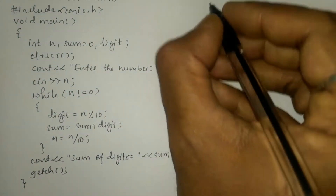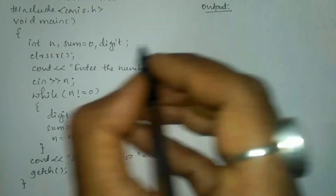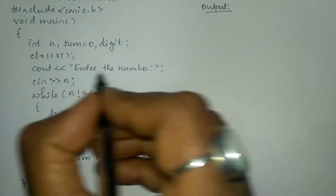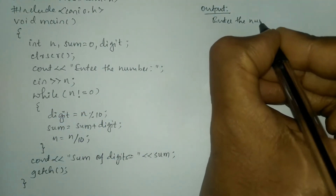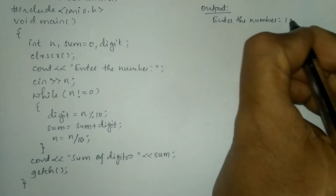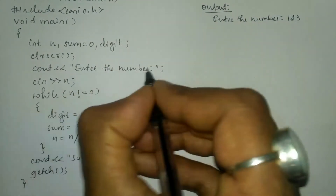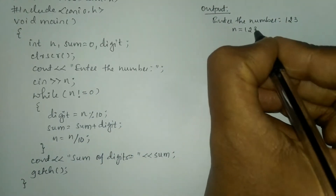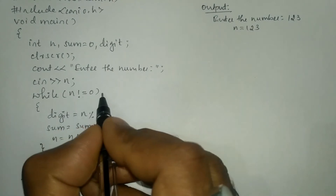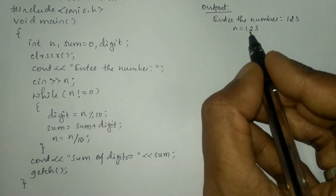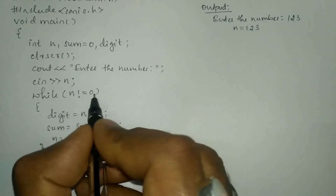Now let us take an example — I'm going to write the output. Once we compile and run this program it will ask the user to enter the number. I'm going to enter 123 for example. So this value will be stored in n, so n is equal to 123. Now we are going to check while n is not equal to zero — yes, 123 is not equal to zero, so it is true.